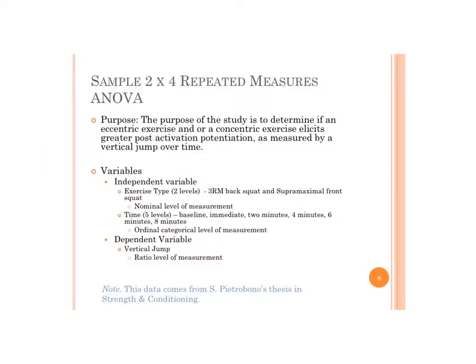In this video we're going to look at a two-by-four repeated measures factorial ANOVA. This data comes from Stefano Petriobano's thesis in strength and conditioning. The purpose of the study was to determine if eccentric exercise or concentric exercise elicits greater post-activation potentiation, as measured by vertical jump over time.